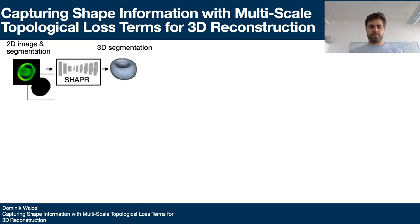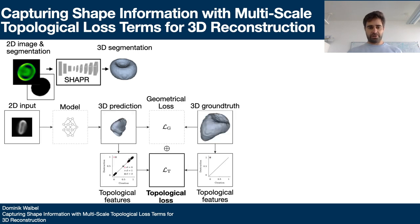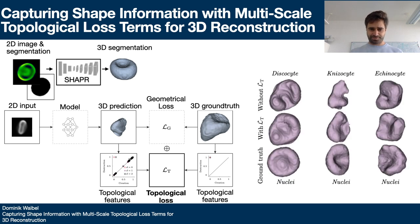To briefly summarize, we've used the Shaper model to perform experiments showing how well our topological loss enhances a spatial reasoning task, which is based on a cubical complex and extracting topological features. Results clearly improve both visually and quantitatively.